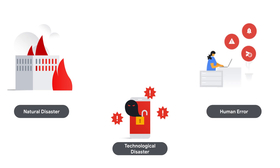Disaster recovery scenarios can also include human-caused disasters, such as explosions, terrorist attacks, or huge production errors. Disasters can occur anytime and in any form — they are often unavoidable. The key is to always be prepared with a recovery plan. No matter what type of disaster strikes, a disaster recovery plan can help you protect your data, restore your IT infrastructure, and recover your business operations.